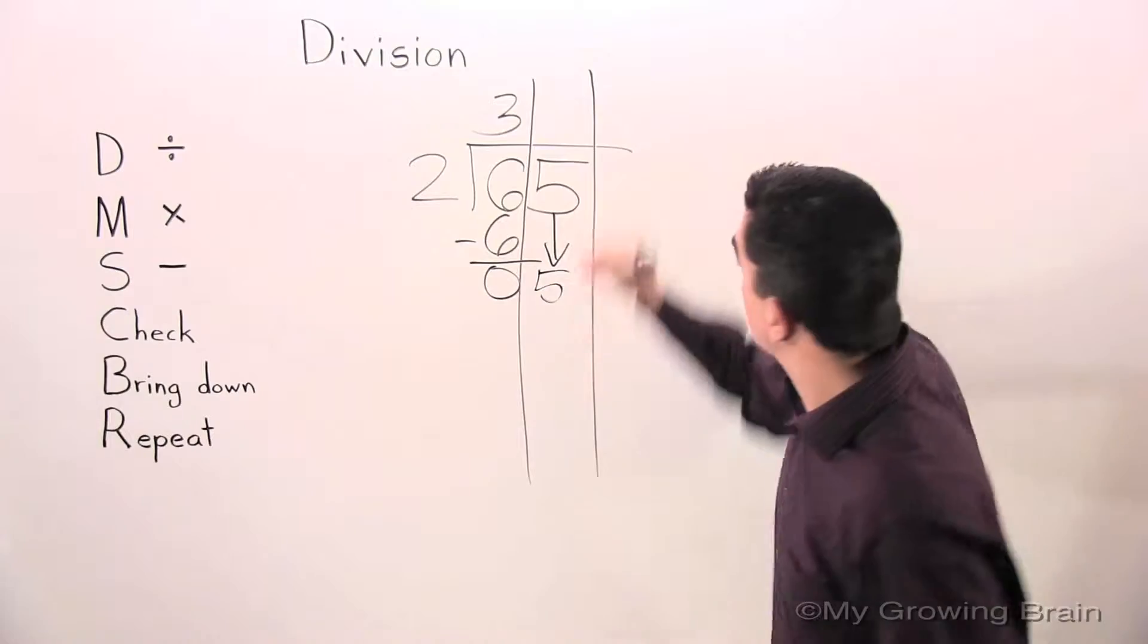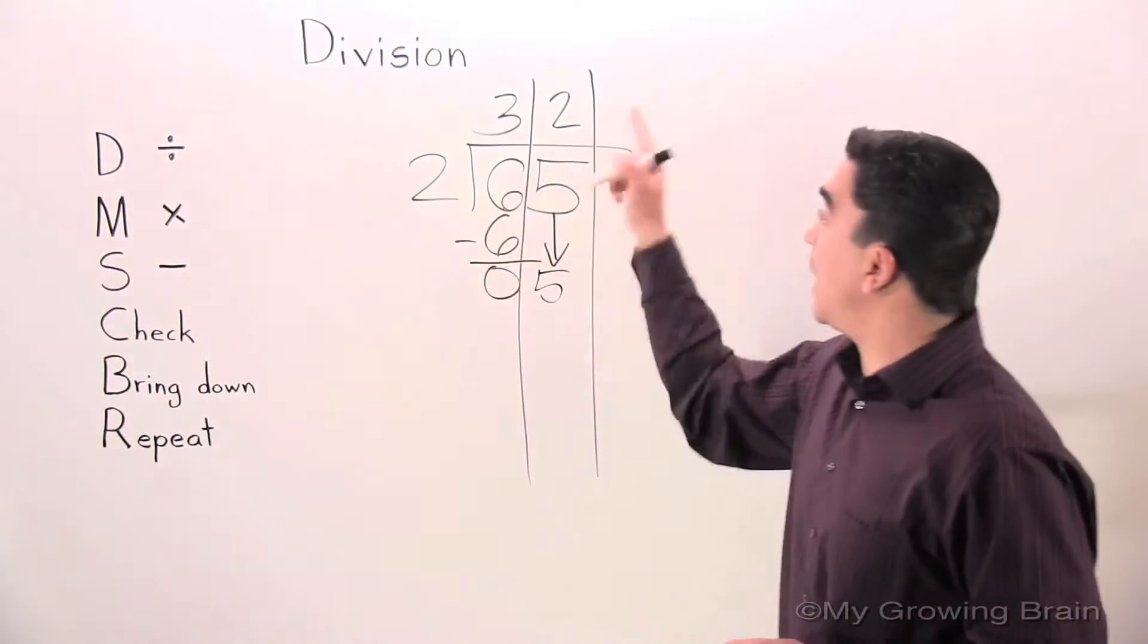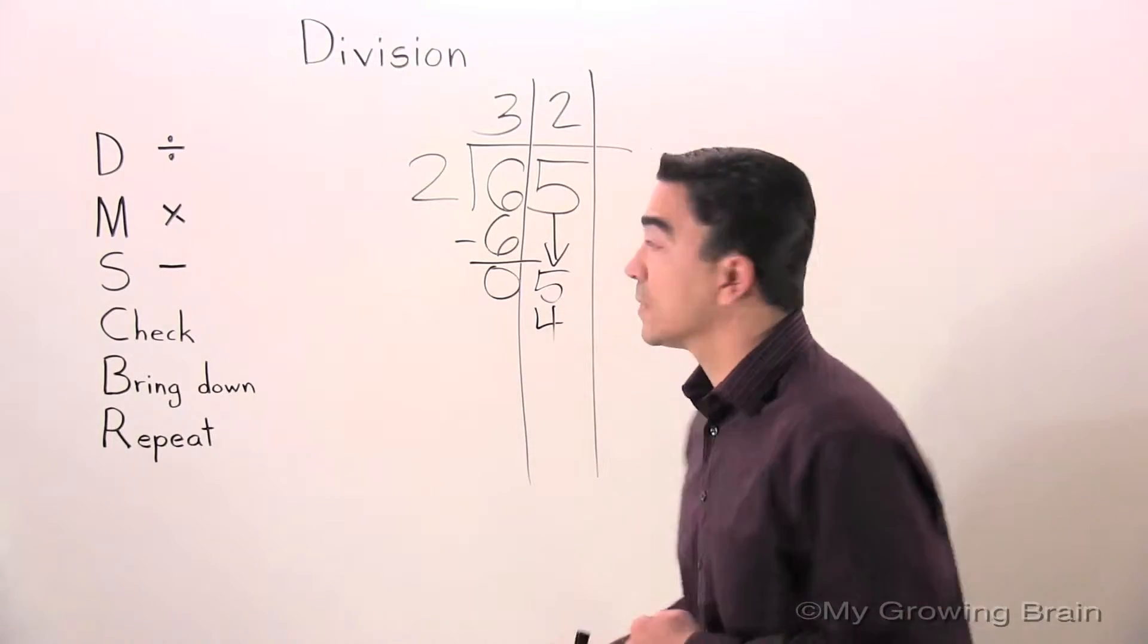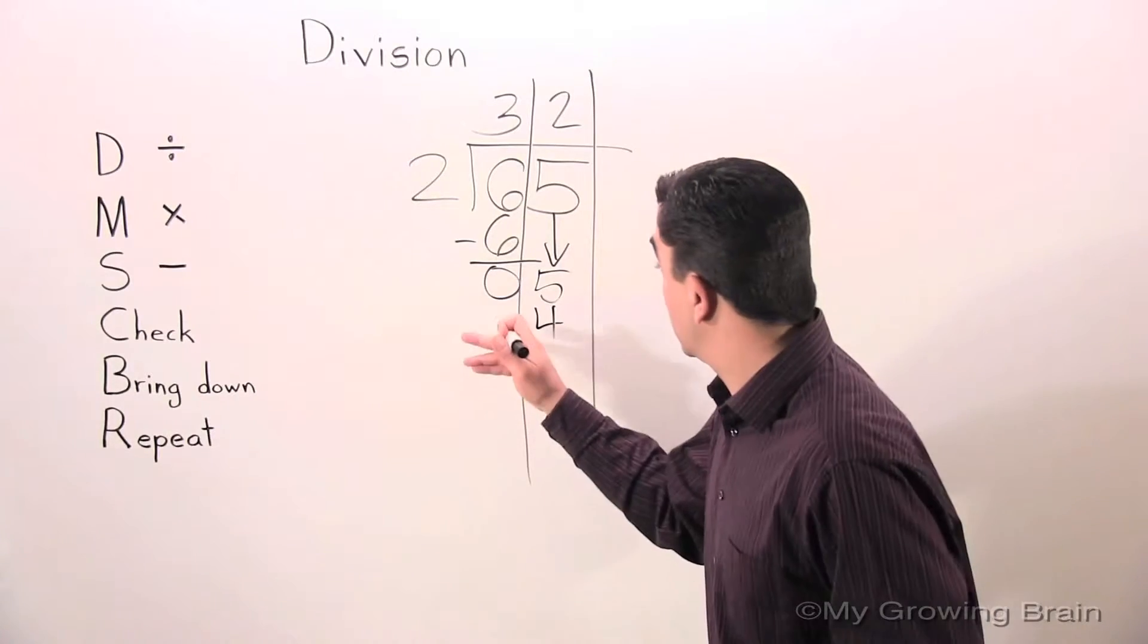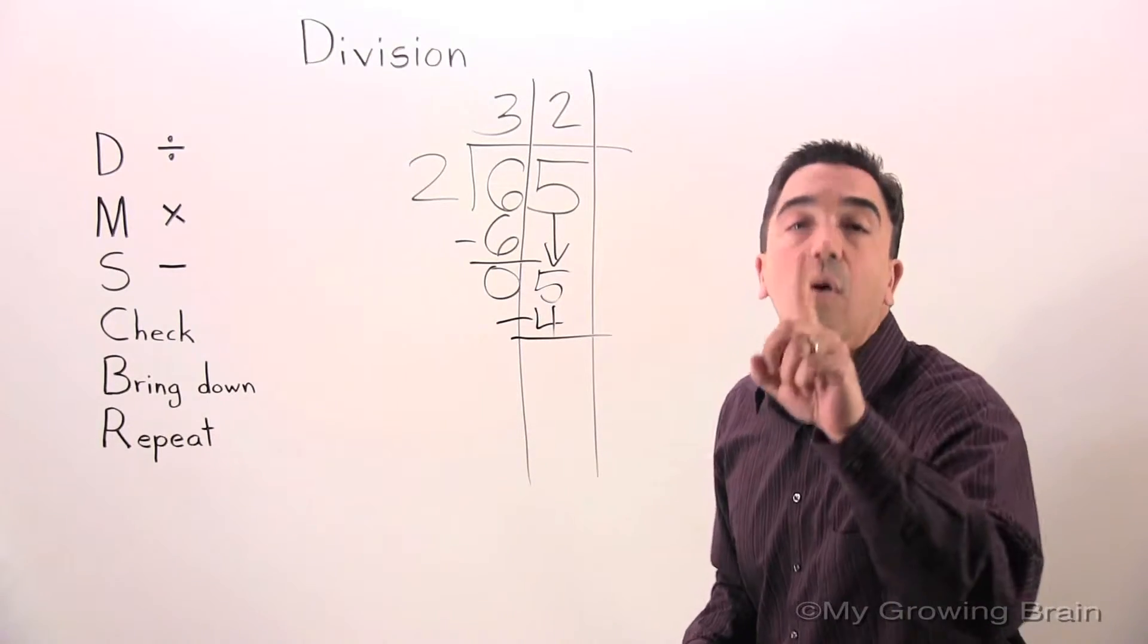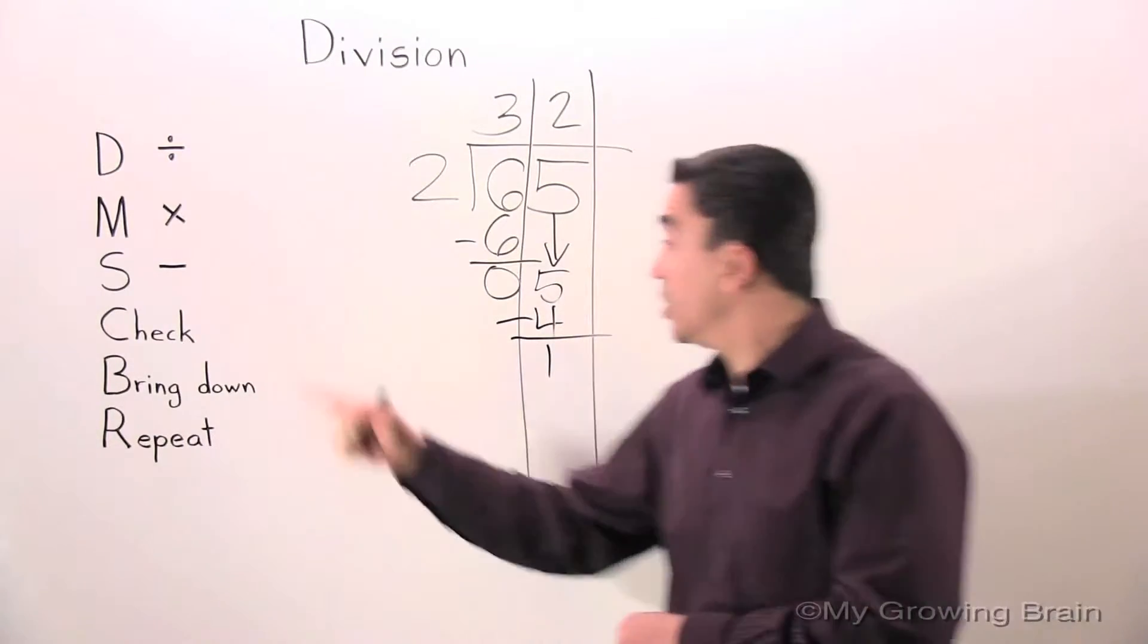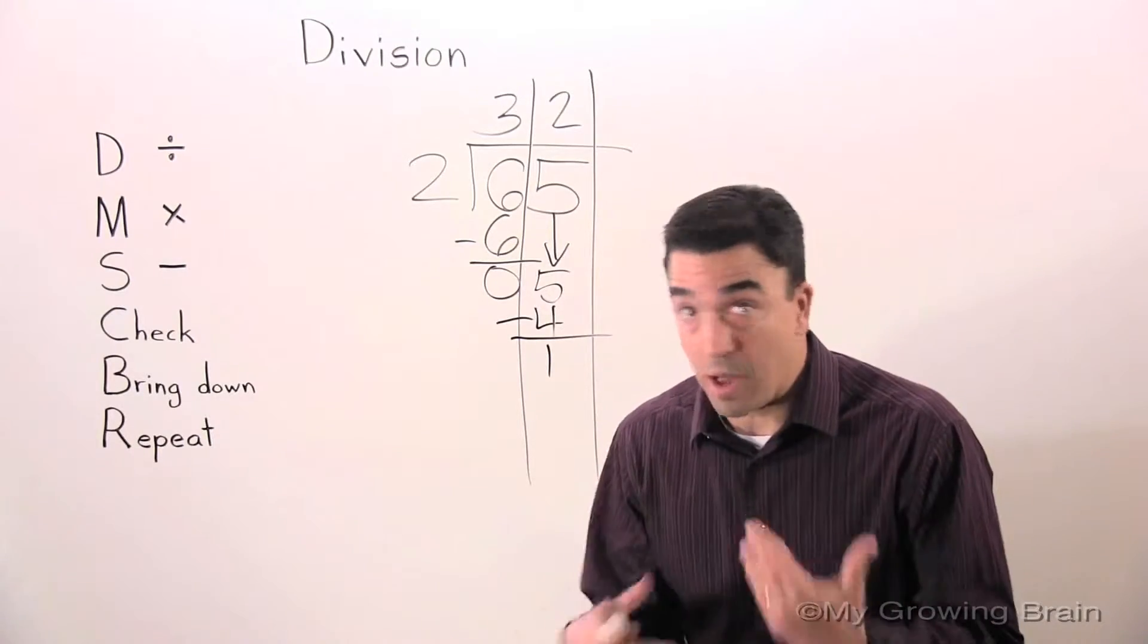2. Next step, multiply. 2 times 2, 4. Next step, subtract. 5 minus 4, 1. Next step, check. 1 is less than 2. Keep on going.